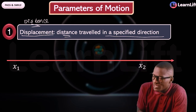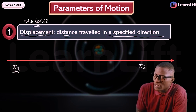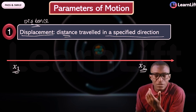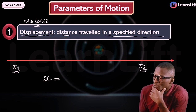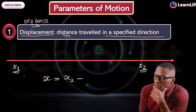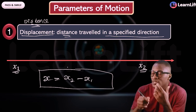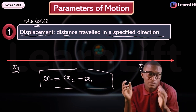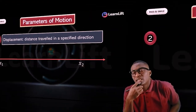For example, on a straight line from x1 to x2, the body was initially at x1 and moves to x2. Displacement x is given by the final position x2 minus the initial position x1. This is the formula for displacement.